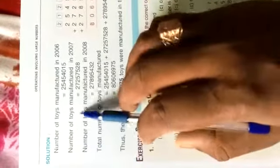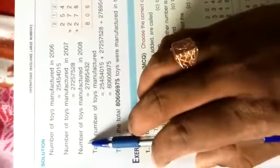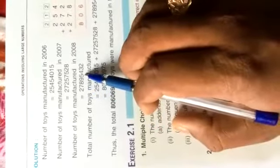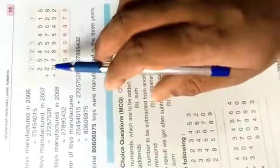Third statement: Number of toys manufactured in 2008: 2,78,95,432. Children, solve in rough copy. First, arrange the three digit numbers in columns, and after that, add all numbers. So the result is the total number of toys manufactured.